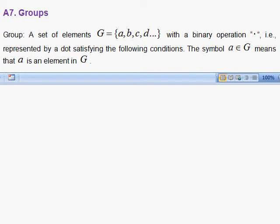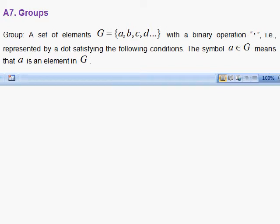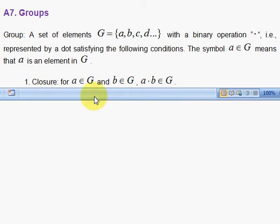Now let's look at the properties of the group. First is closure. For an A that's an element in G, and B that's in the group G, A dot B must also be in the group G. That is closure.